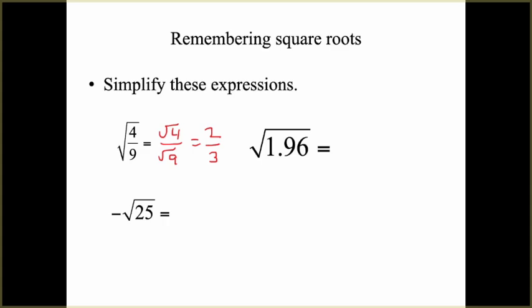Looking at the square root of 1.96: if you go back and look at our list of perfect squares, you might recall that 14 squared is 196. This is just a decimal, and when you multiply decimals together, you combine their decimal places. Since we have two decimal places in the result, we must have started with a single decimal place in both factors. So the square root of 1.96 is 1.4, because 1.4 times 1.4 gives you two decimal places.